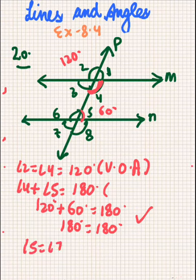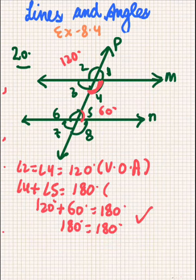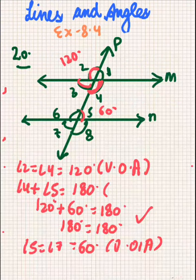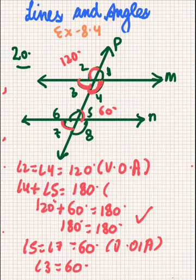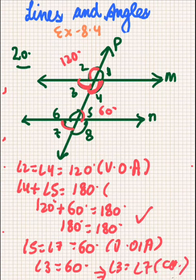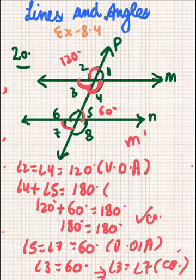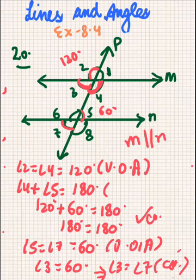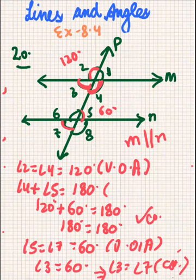Alternatively, angle 5 will be equal to angle 7, which is 60 degrees, because these are vertically opposite angles. Also, angle 2 plus angle 3 form a linear pair, so angle 3 will be 60 degrees. Then angle 3 and angle 7 are corresponding angles. Using these reasons — co-interior, corresponding, alternate interior, alternate exterior — these angles prove that M is parallel to N. You can prove using one or two methods.